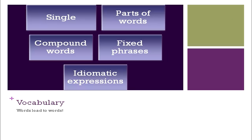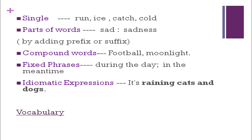Words can be single, they can be parts of words, there can be compound words, there are fixed phrases, and there are idiomatic expressions. Words generally lead to words — we learn like that. Single words are: run, ice, catch, cold. Sometimes, without context they are still conveying meaning. From 'sad' we can say 'sadness' by adding a prefix or suffix. Compound words like 'football' and 'moonlight'; fixed phrases like 'during the day', 'in the meantime'; idiomatic expressions like 'it is raining cats and dogs'. So vocabulary is not only words — it is a range of different types of words used in different contexts.